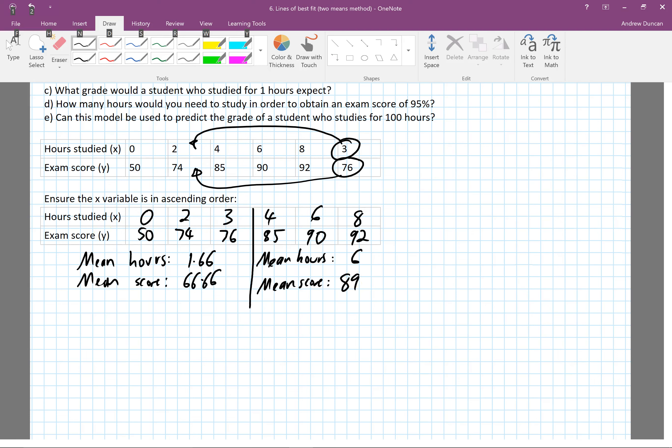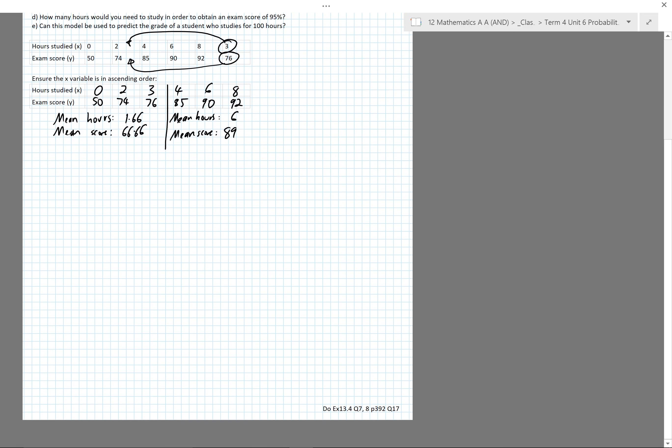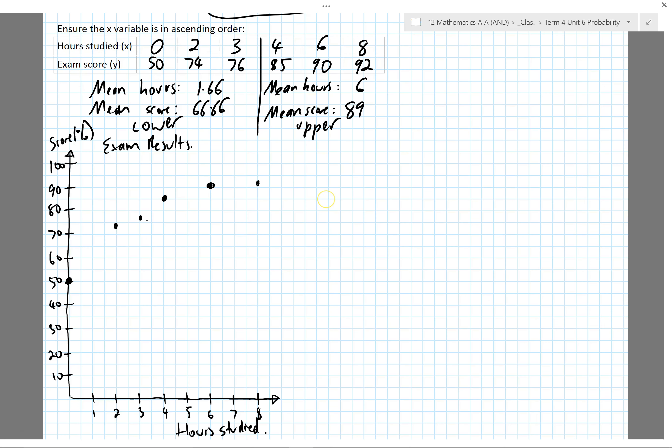Now that I've done that, I can go ahead and draw a scatter plot, plotting that information on the graph and also putting my lower and upper mean on the graph. Looking at the exam results, the black dots, I can see a positive relationship. The more hours we study, the higher score we should get.